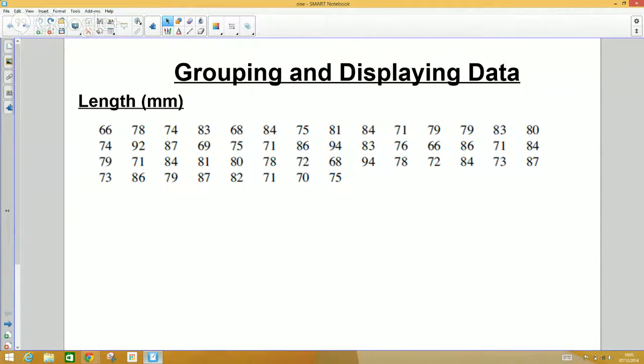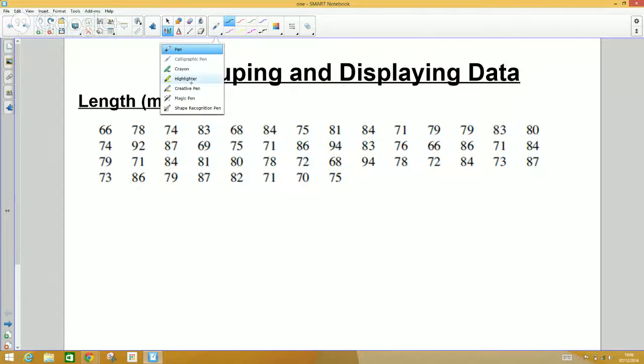What we do here is have a quick scan of the data and try to spot what we consider to be the smallest and the largest values. Looking across the data, 66 seems to be about the smallest and 94 seems to be about the biggest.